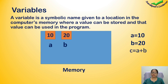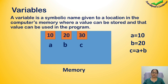Next, if we write C is equal to A plus B, then the area will be occupied for C. If we add the values 10 and 20, the result is 30, so C will equal 30. So whatever variables you declare, the same space will be occupied in memory.